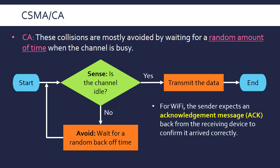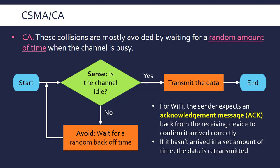Another term often packaged with this topic by exam boards is the ACK — acknowledgement. Part of the Wi-Fi protocol is that when you send a message to a receiver, the receiver will send back an acknowledgement message, written as ACK. Once you send a message, a stopwatch starts and it will wait to receive the acknowledgement. If it hasn't received it in a set amount of time, the data will be retransmitted because a collision has occurred. This timeout might be dynamically calculated based on how congested the network is — another optimisation to make this as efficient as possible.